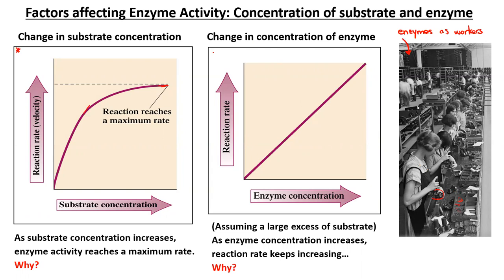If we change the concentration of enzyme instead and keep everything else constant — here assuming a large excess of substrate — we see that by increasing the enzyme concentration, the reaction rate will increase, and more chemical reactions will occur. And this has no maximum; it just keeps increasing. Why is that? Think of the enzymes as the workers in the factory. We have plenty of components — we're assuming a large excess of substrate. We're adding more workers. As we add more workers, those workers can work and build the devices, so more devices will be built if we have more workers, assuming substrate is in excess.